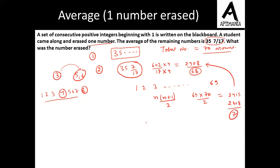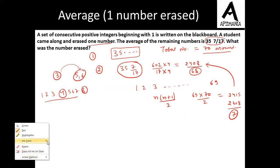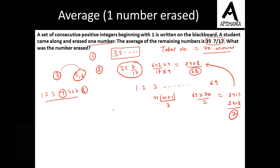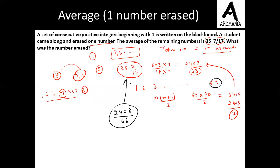Now let's cross-check. Suppose we delete 7. The total sum is now 2408, and the number of remaining terms is 68. Initially it was 69, but one number was erased. When we divide 2408 by 68, we get the same result: 35 and 7 by 17. This confirms the answer.